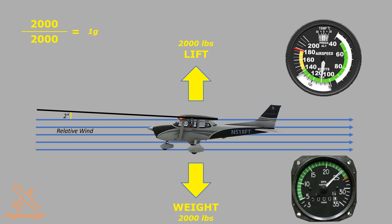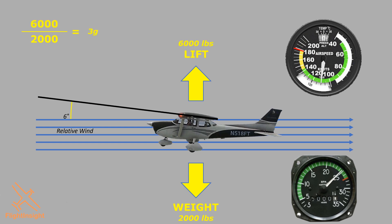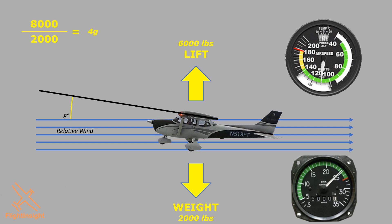We increase power and return to our original situation. Now let's start pitching the airplane up while leaving power and airspeed alone. We only need 2 degrees of angle of attack at this speed to maintain sufficient lift. If we pitch up to 4 degrees — doubling this angle — we can expect our lift to double as well to 4,000 pounds. Doubling our angle of attack has doubled our lift and consequently doubled our load factor to 2G. We would do this by abruptly pulling back on the elevator control. You'd be pulled into your seat and feel twice as heavy as normal.